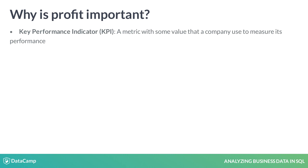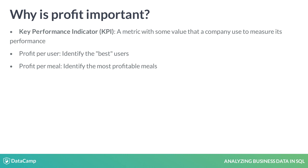Profit tells you whether a company is making or losing money after everything is accounted for. Profit per user helps you identify the best users — those who bring Deliver the most money. Profit per meal helps you identify the most profitable meals. Finally, profit per month tracks profit over time, signaling whether or not Deliver is getting better at making money.